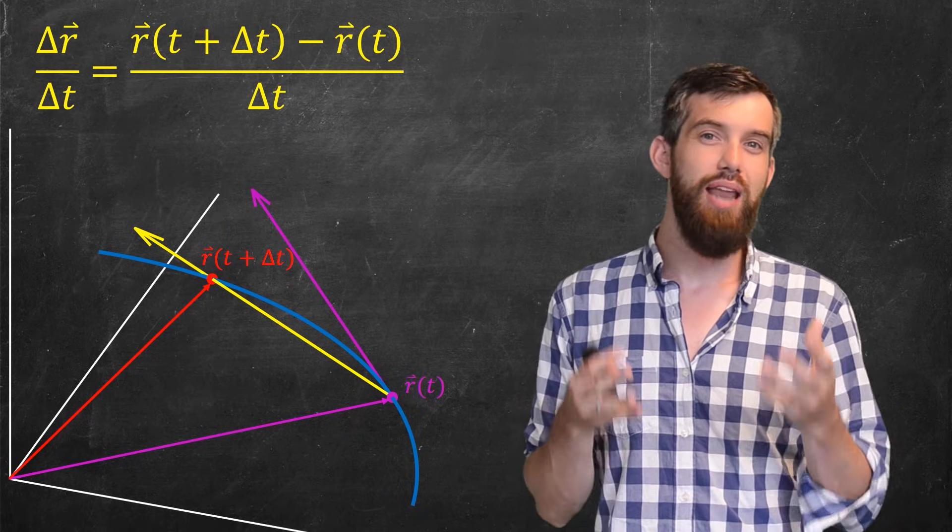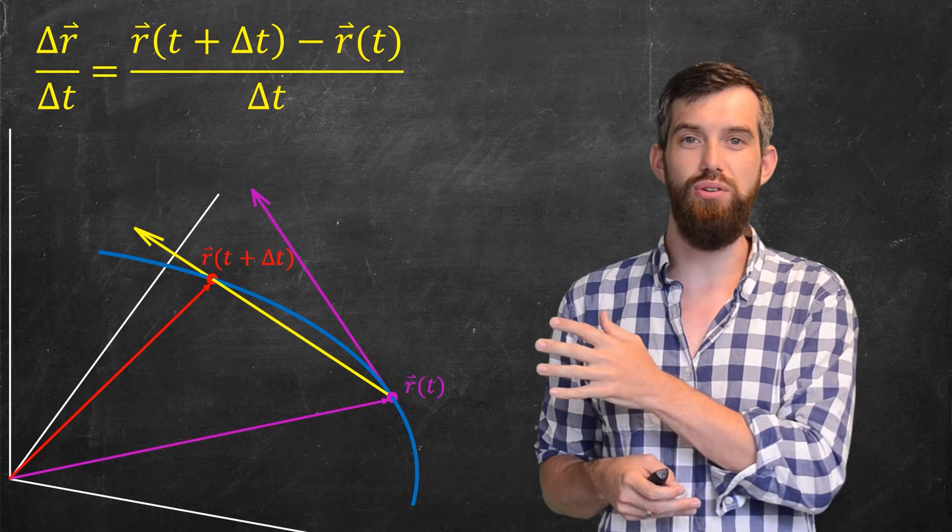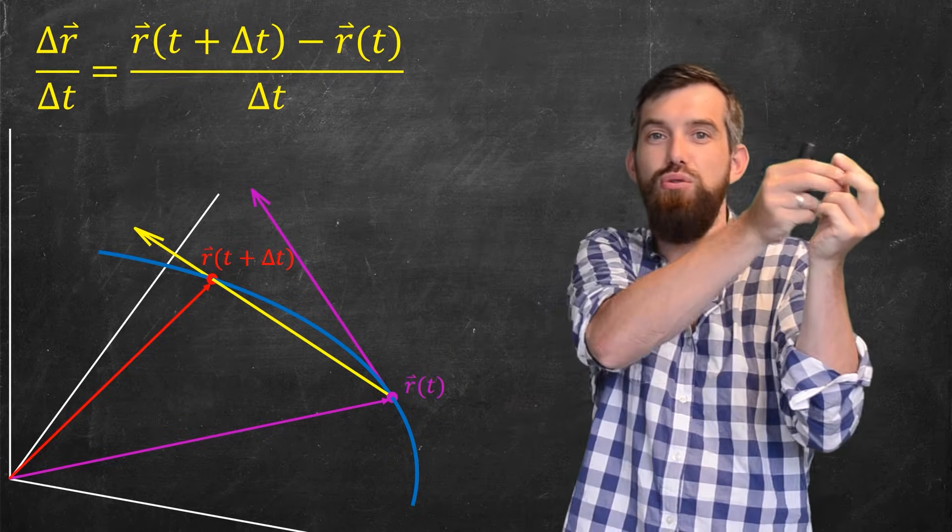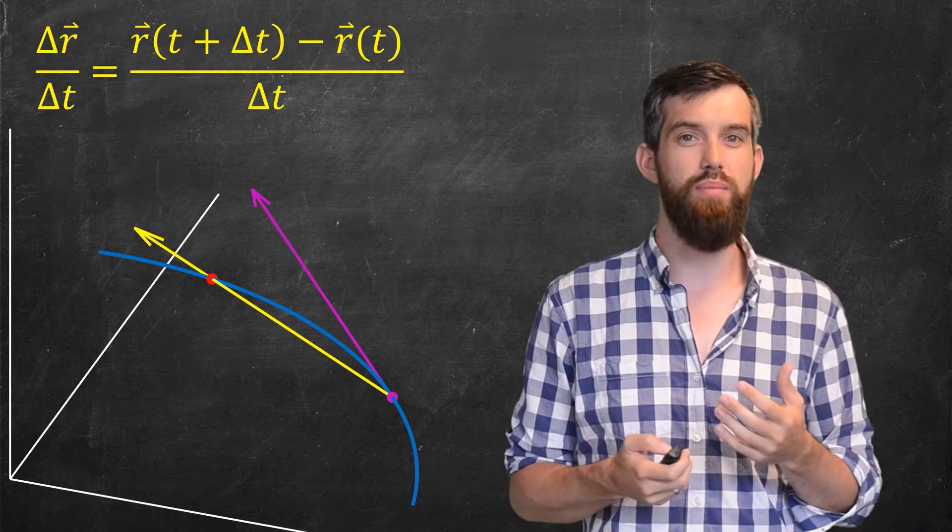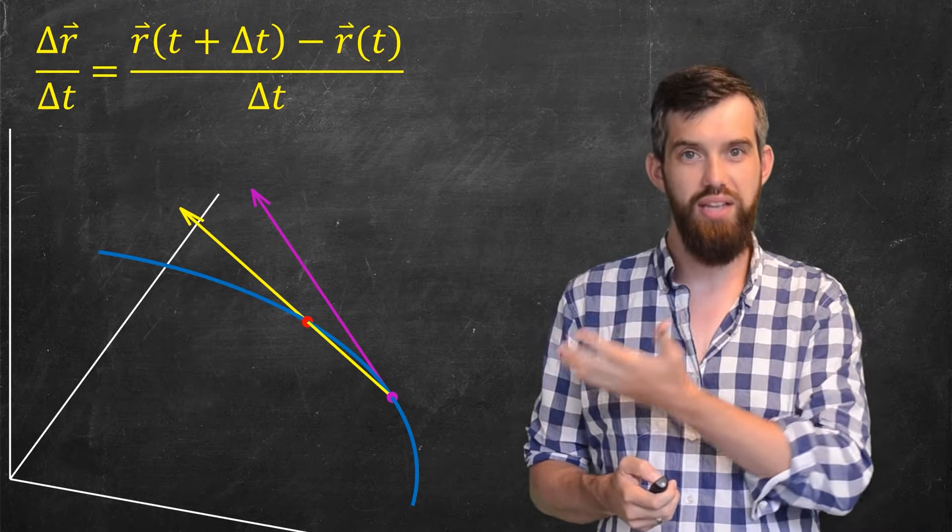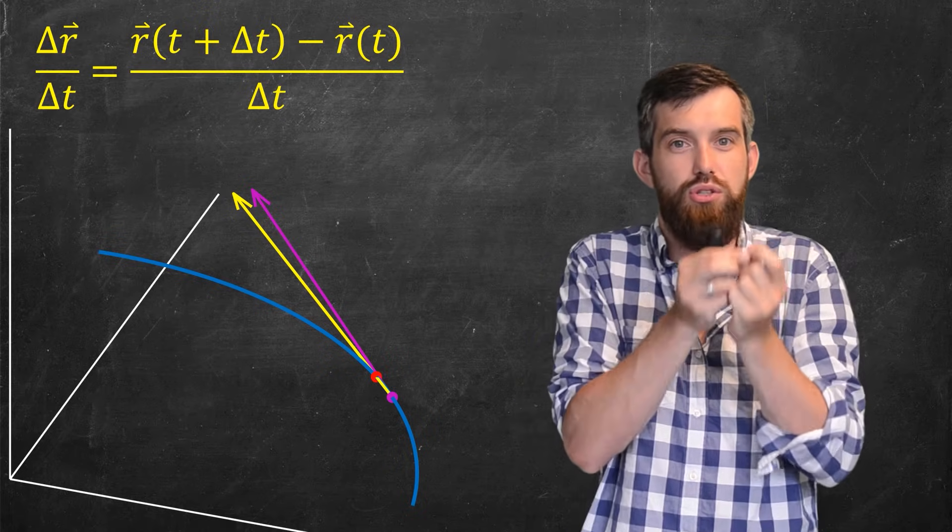Next step. Now let me make my delta t closer and closer to zero. That is, my two points, I want to make them closer and closer together. So if they start relatively far apart, I'll step in once, and twice, and three times, and four times, and I keep on making my two points closer and closer and closer together.